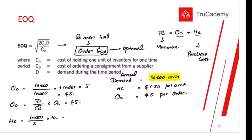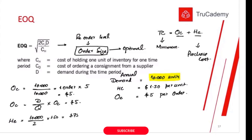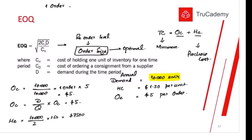10,000 divided by 2 gives us 5,000 units average inventory. Holding cost per unit is $1.50, so 5,000 × $1.50 = $7,500. So if we place one big order throughout the year, our ordering cost will be $5 and holding cost will be $7,500 — giving a total inventory-related cost of $7,505.